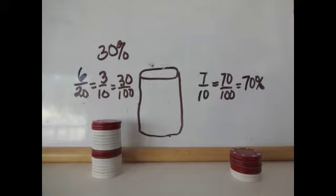Let's take a look at another example. On the left, I have a 30 percent solution. 6 out of 20 of the chips are red, which reduces to 3 tenths. Multiply both numerator and denominator by 10, and I have 30 over 100, or 30 percent. And on the right, I have 7 red chips out of 10, or 70 percent.